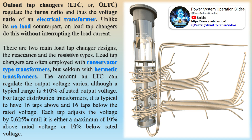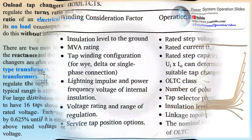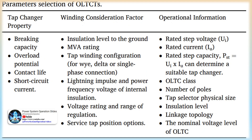In the diagram, S is the diverter switch and 1, 2, and 3 are the selector switches. The tap changing employs the center-tapped reactor R as shown. The transformer operates when switches 1 and S are closed. To change to tap 2, switch S must be opened and switch 2 must be closed; then switch 1 is opened and switch S is closed. The diverter switch operates on load and no current flows in the selector switches during tap changing.